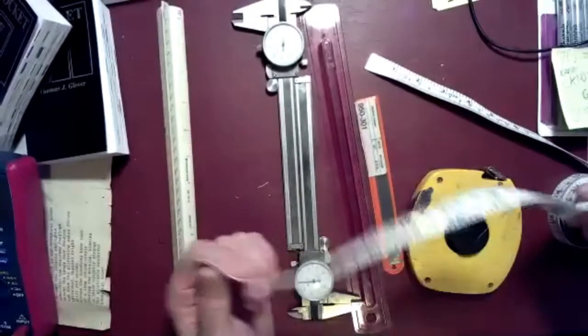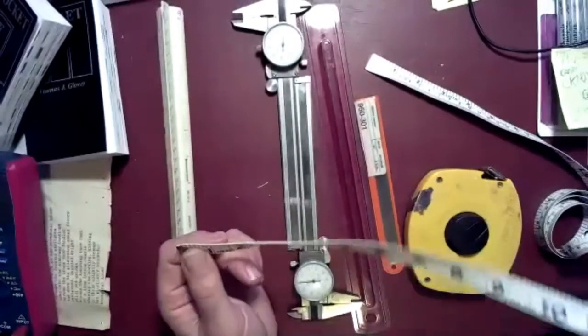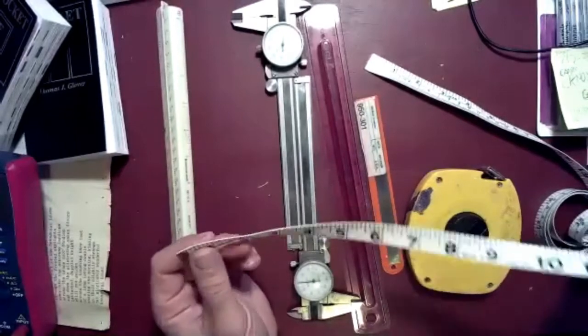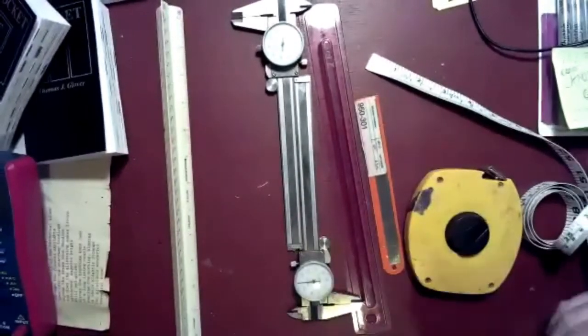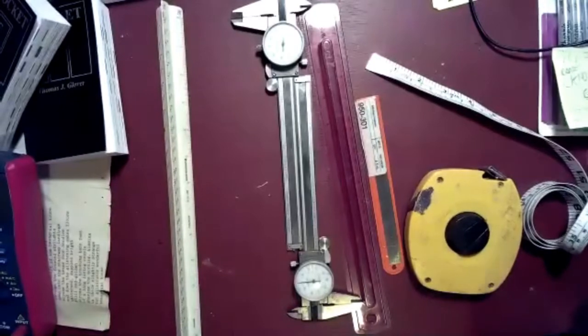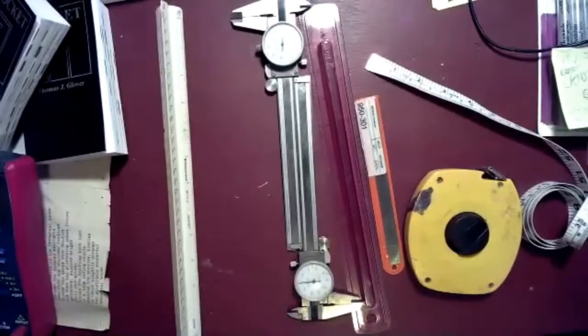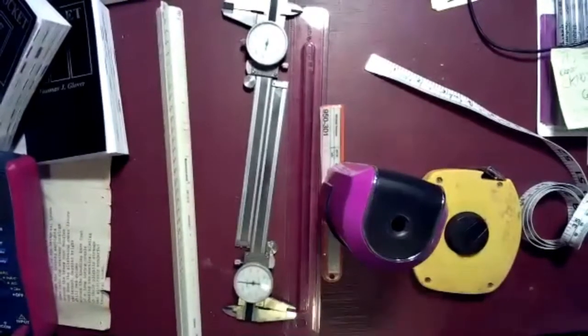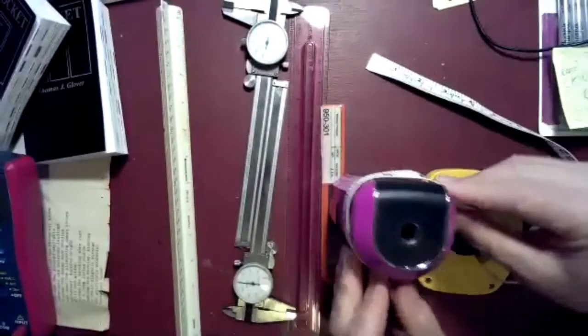So if you have to measure around a waistline, and we're not going to talk about where mine is these days, you can wrap this around the waist and get an easy circumference of my chubby personage. Also you can measure around odd shaped objects like this little pencil sharpener.